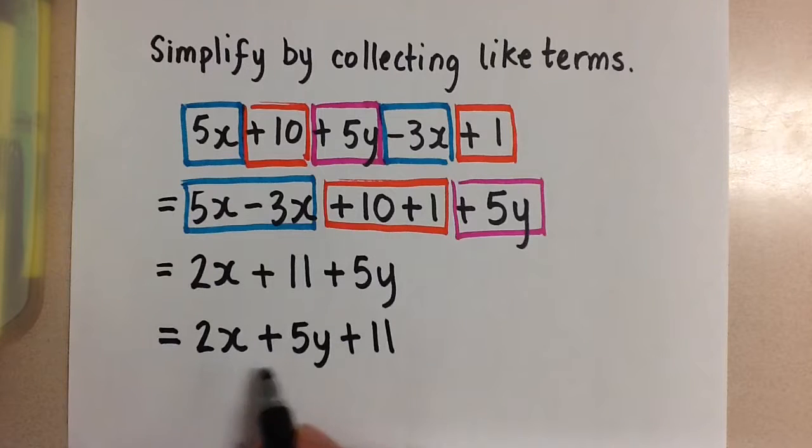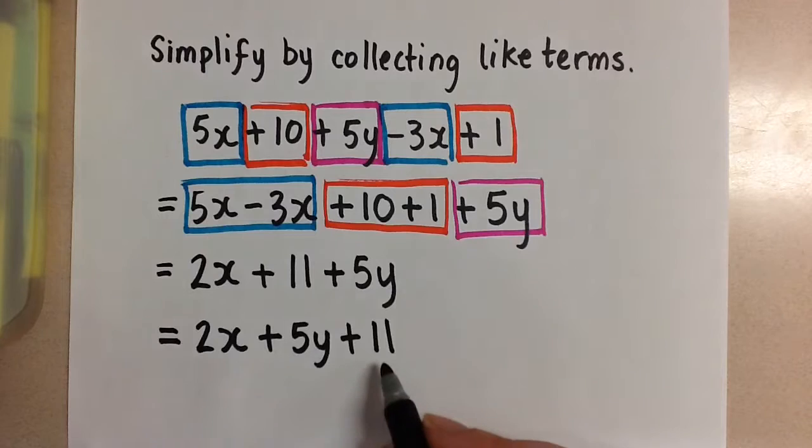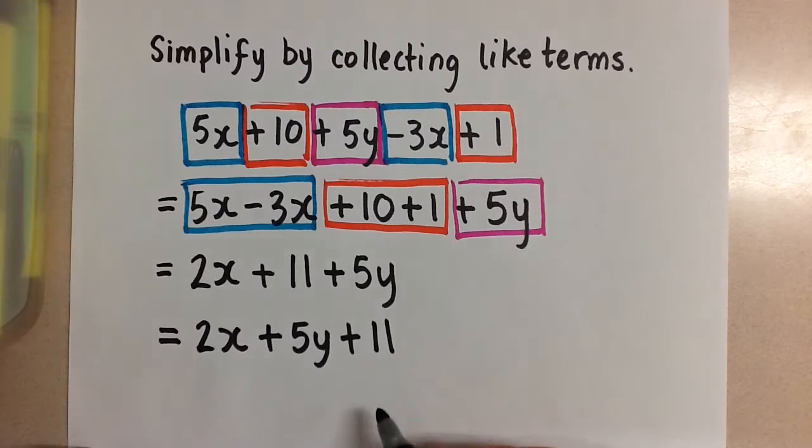And now I have a trinomial, 3 different terms here, an x term, a y term, and a constant term. And I can't combine any of these together any further because none of these are like terms. So this is our final simplified answer.